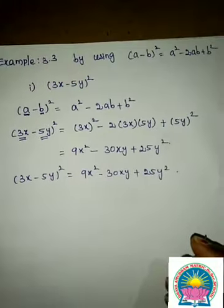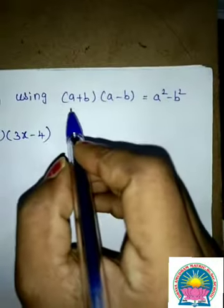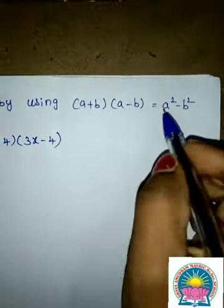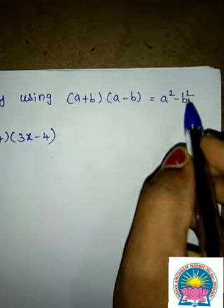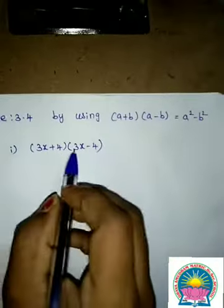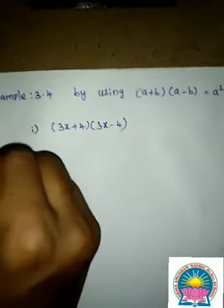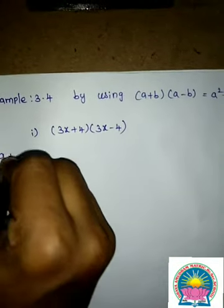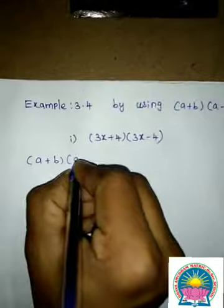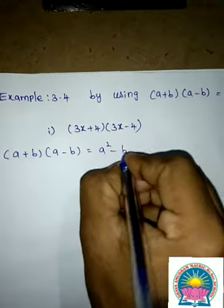Very good, children! Next, the fourth identity: (a + b)(a - b) = a² - b². We use this identity for the given sum. The format is: (a + b)(a - b) = a² - b².